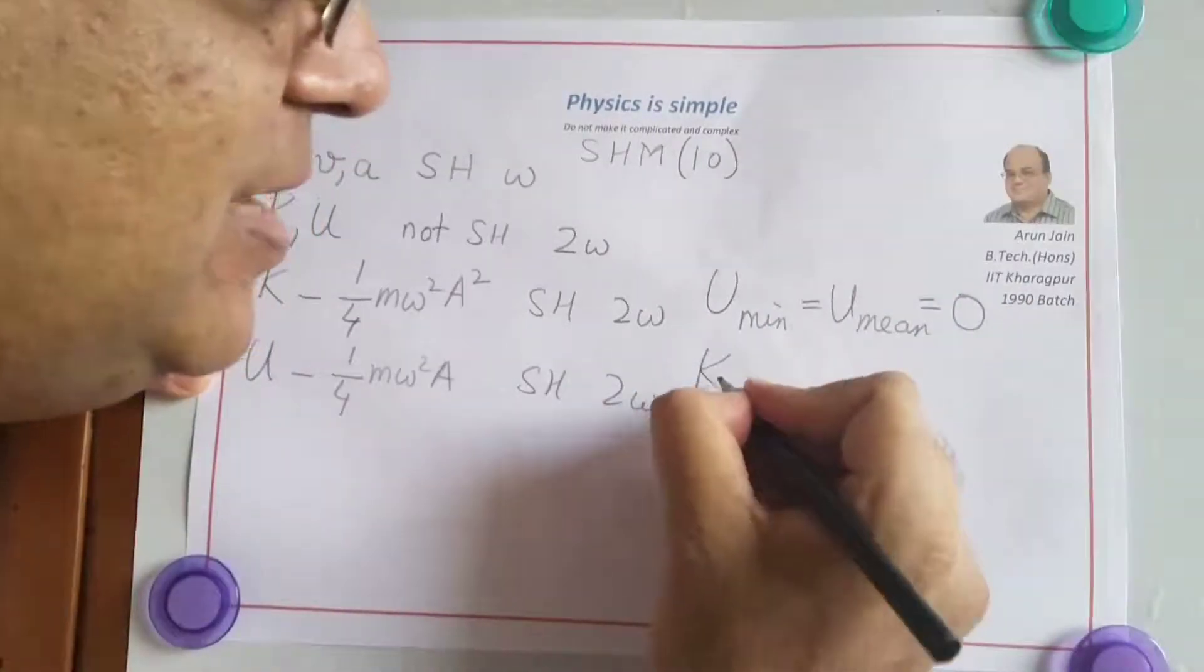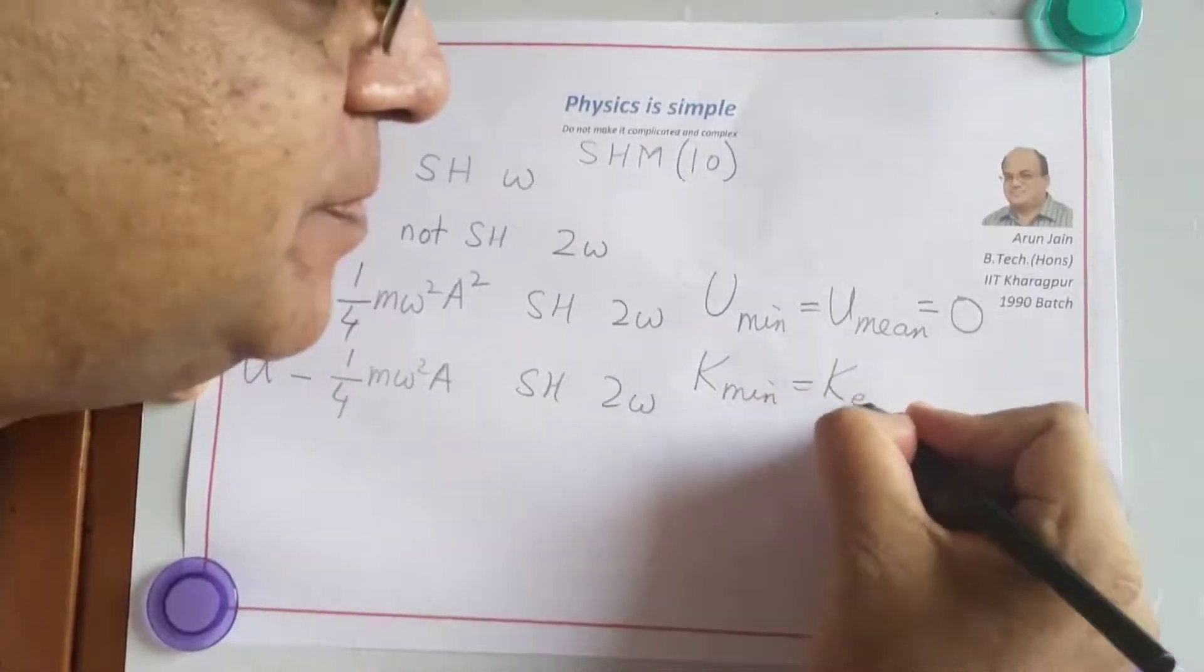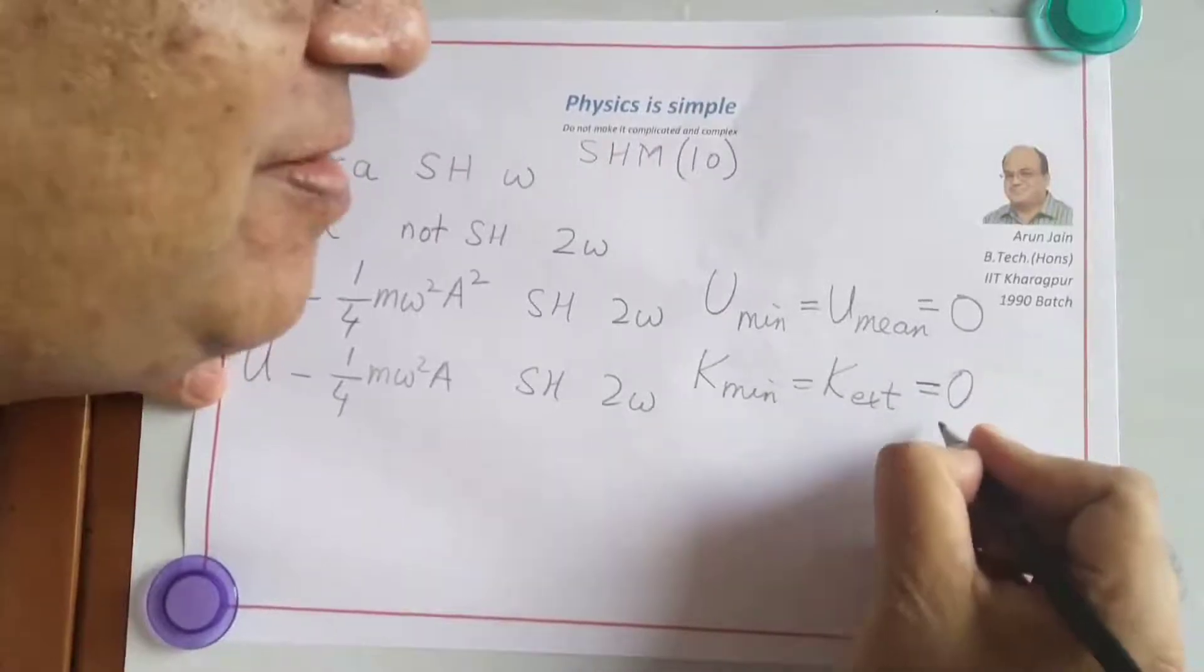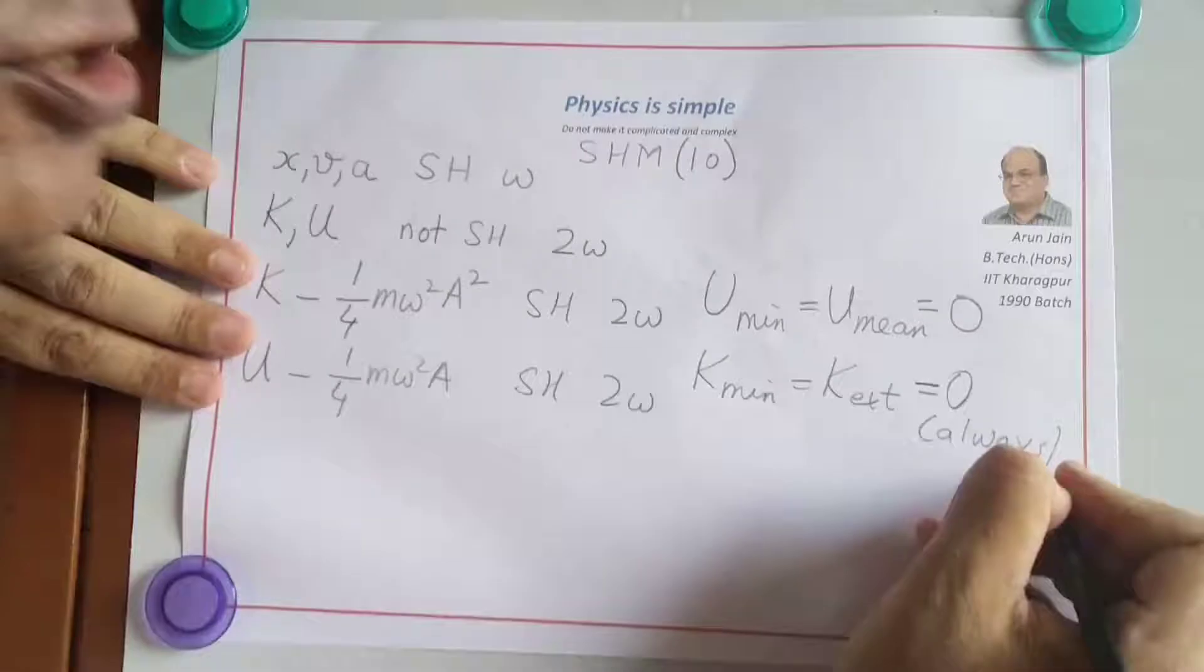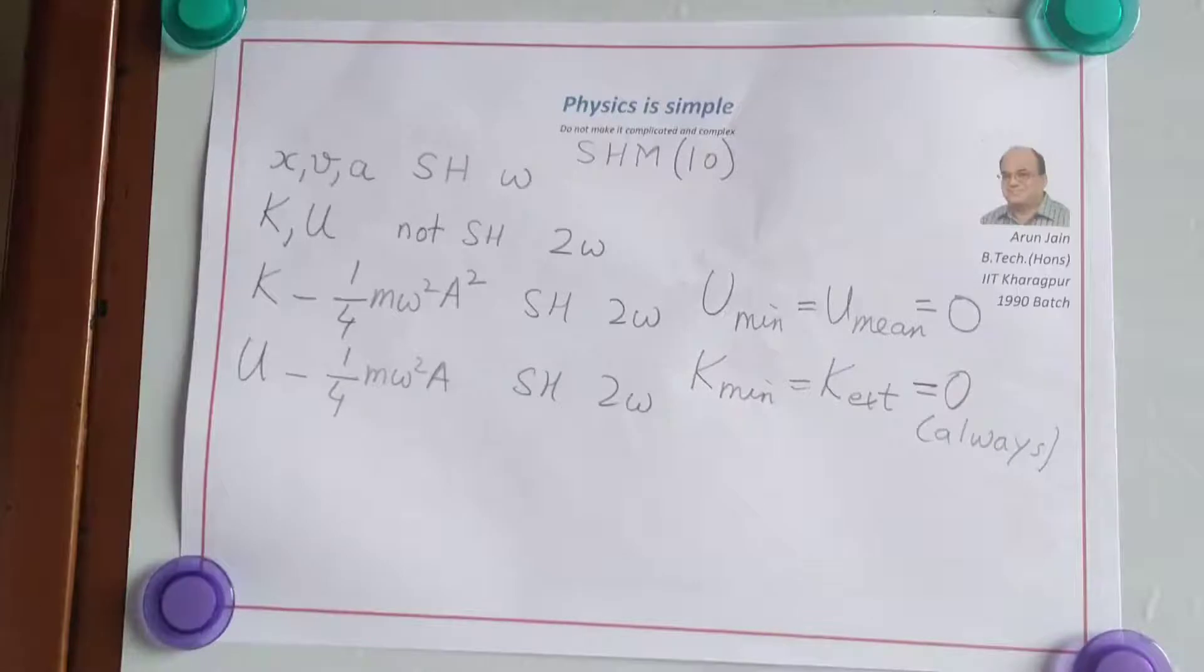Kinetic energy is minimum at the extreme position and that is always equal to 0 because the particle has to come to rest and then turn back. Kinetic energy minimum value is always 0, potential energy minimum value can be anything, it can be taken to be 0.